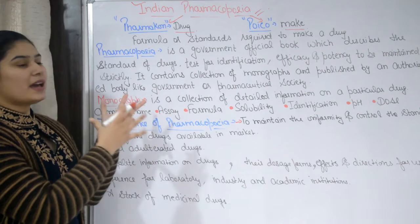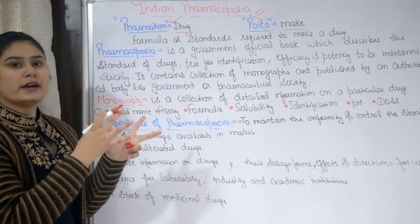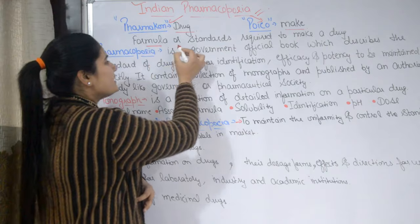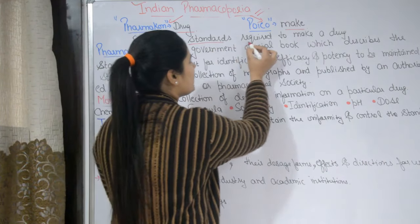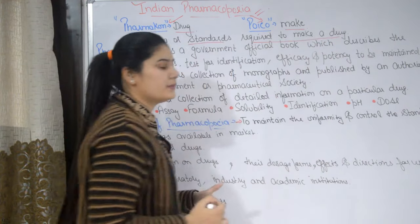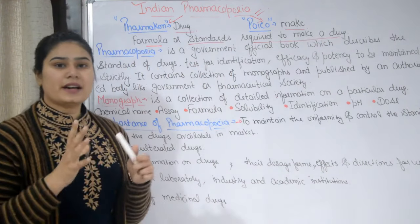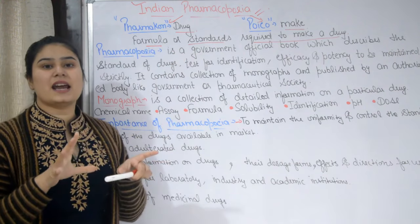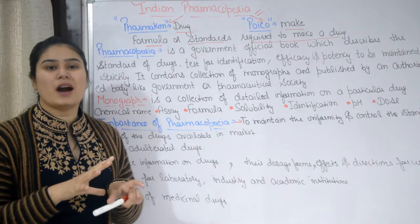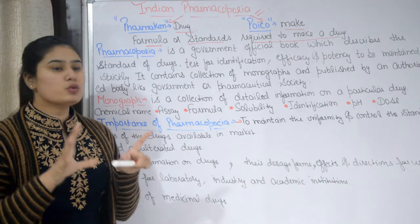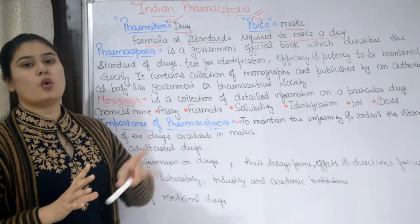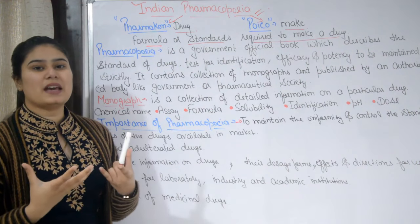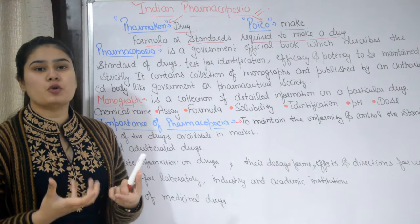So what does this mean? It refers to the formula or standards required to make a drug. The collection of these standards is called pharmacopoeia. Pharmacopoeia is an official book.